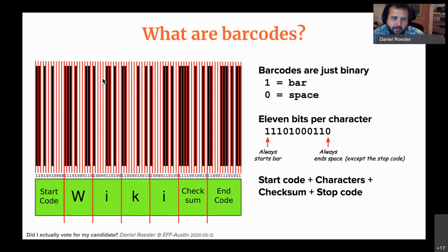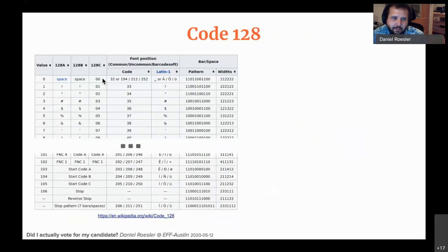So how do you look up what those ones and zeros actually mean? Say you've decoded a barcode into a set of characters — how do you know it translates to W, I, K, I? You look it up in a table. Wikipedia has a table of all the various characters. The patterns are those 11 bits, and you just match up the ones and zeros.